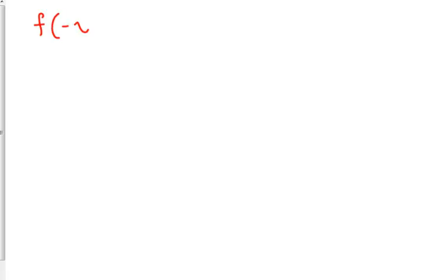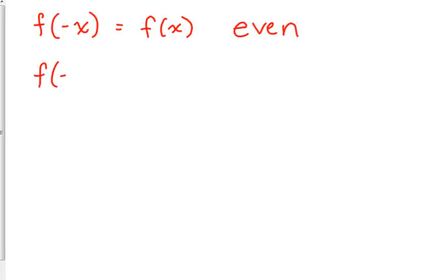These are called even and odd identities because — remember we talked about this at the end of our functions unit — when we plugged negative x into our function, what happened when we got the same thing as the original function? That was even. What that means is f of negative x is the same as f of positive x — they have the same y values. That's symmetry across the y-axis. And when we plugged in negative x and got the exact opposite of the original function, that was odd.